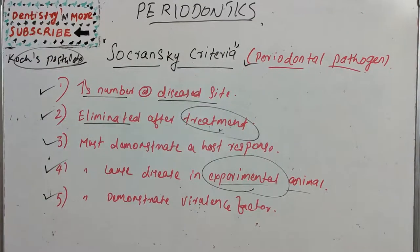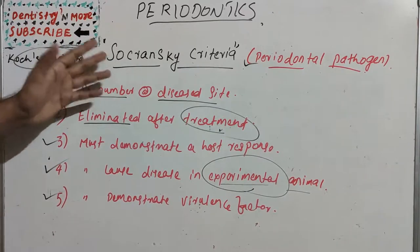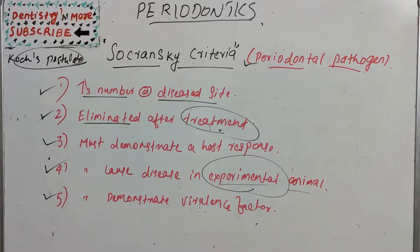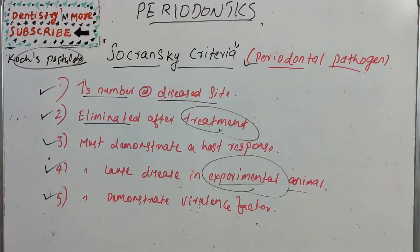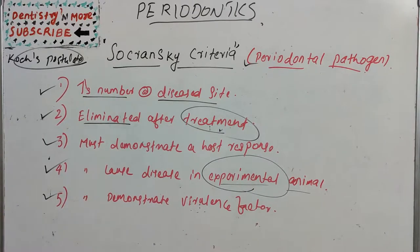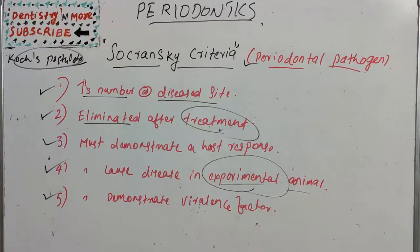So these are the five Socransky criteria to name any group of bacteria or microorganisms as a periodontal pathogen: increased numbers at diseased sites; eliminated or reduced after treatment; must demonstrate a host immune response; must cause disease in experimental animals; and must demonstrate virulence factors. That covers this concept of how a bacterium or group of microorganisms is named as a periodontal pathogen.